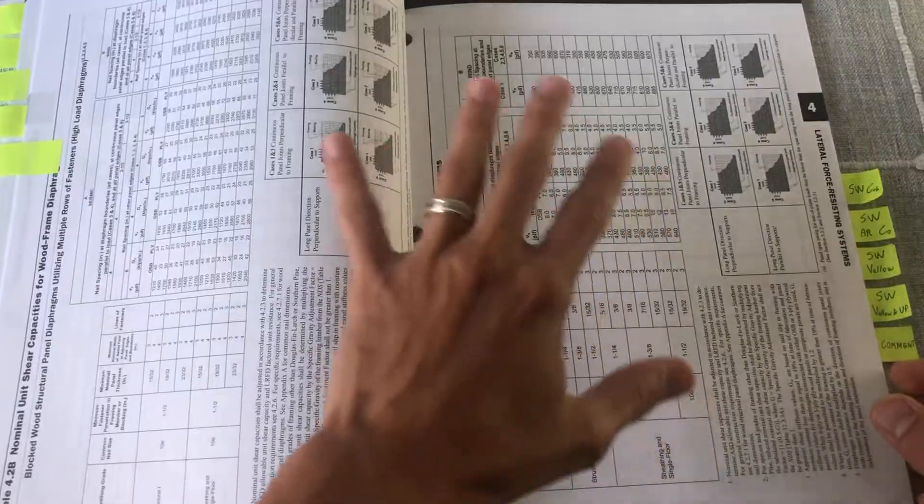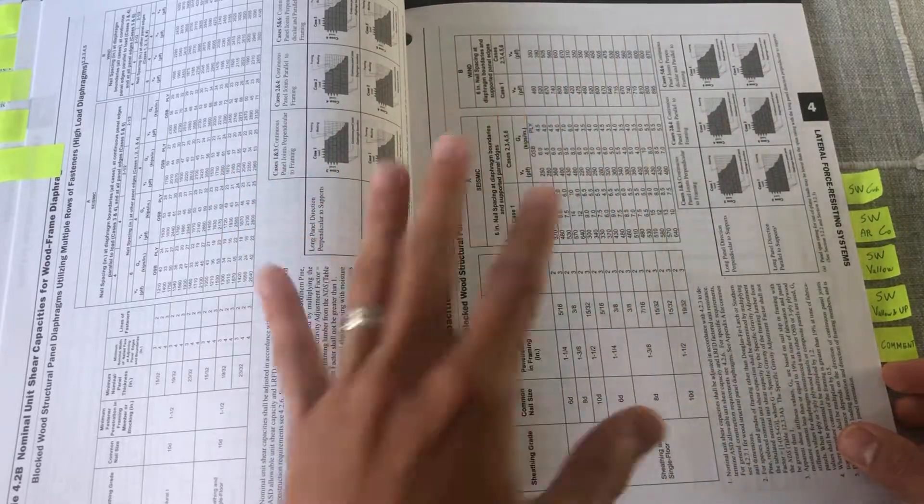Which is nice about wood design is the fact that you can get your capacities from a lot of tabulated values.